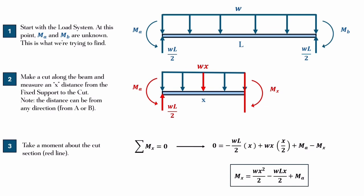So, zero is equal to, you start off with the reaction at the left, negative WL over 2. It's negative because it's going to make a clockwise moment about point X. So, that distance to that cut is just going to be X. So, it's negative WL over 2 times X. That's the first one.